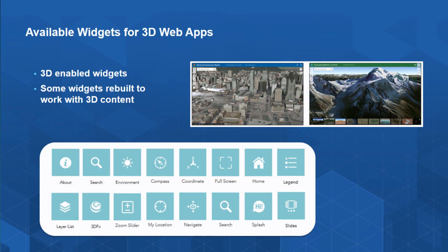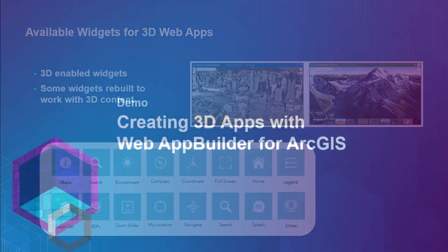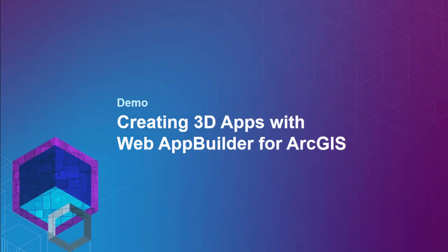A year ago, the team worked hard to enable 3D. The user experience for building a 2D app is the same in 3D — you get a preview window and a configuration panel. Right now we have about a dozen widgets for 3D capabilities. We've enabled what's in the JavaScript API 4.x, and as more 3D capabilities are added, we'll suck those in and enable them in Web App Builder. With that, Jin Shah is going to show some 3D.